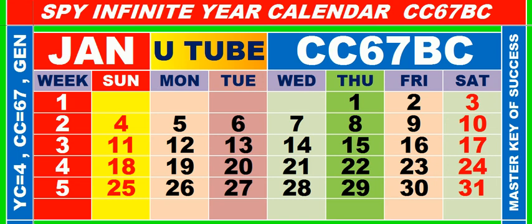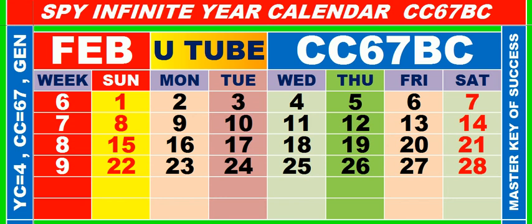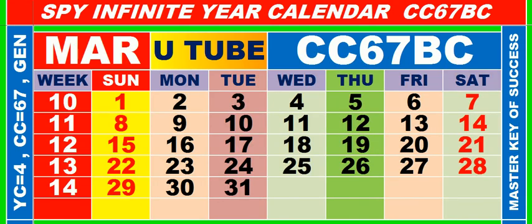Calendar for the month of January, having calendar code equal to 67. Calendar for the month of February, having calendar code equal to 67. Calendar for the month of March, having calendar code equal to 67.